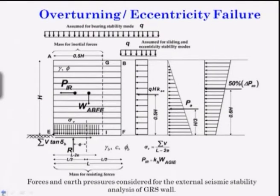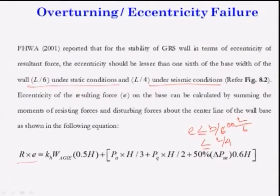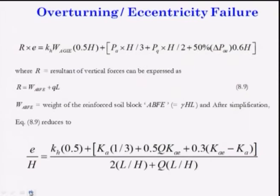The moment equation gives R·E = K_H·W_AGIE·0.5H + [other clockwise terms] − [anticlockwise terms]. Equating clockwise and anticlockwise moments, E/H is expressed in terms of K_H, K_A, K_AE, Q, L, and H.